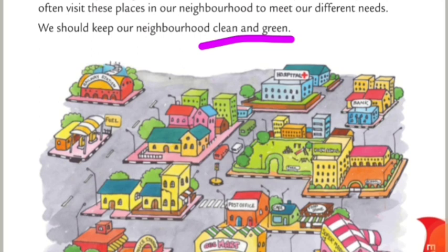First, yeh picture mein railway station hai. Railway station jahan pe bahut saari trains hoti hai. Aap gaye hain na railway station? Jahan pe trains hoti hai, coolies hote hai jo humaara saamaan uthate hai, aur log travel karte hai. To yeh hai railway station.